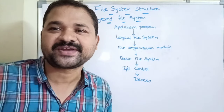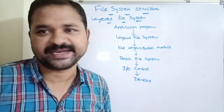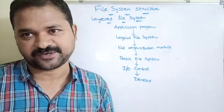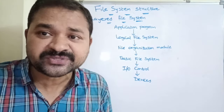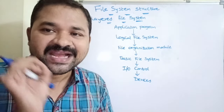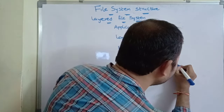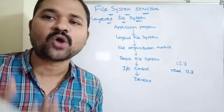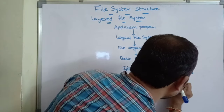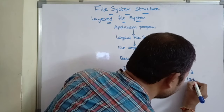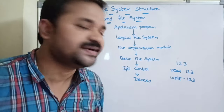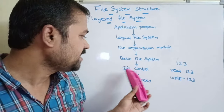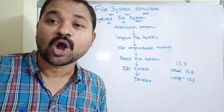For this, it uses directory structures and free space management techniques. Once it finds the physical block number, that block number is given as input to the basic file system. The basic file system issues a command to the I/O control using the block number — for example, 'read block 123', 'write some content into block 123', or 'print the content of block 123' on the monitor.